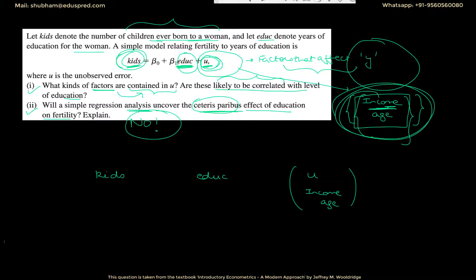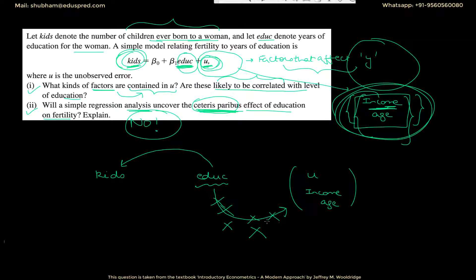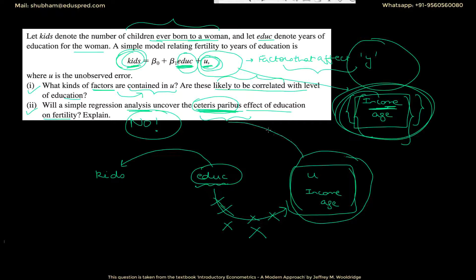If you want the ceteris paribus effect of education on fertility, it means that when education changes, the variables in U should have nothing to do with it — there should be no linkage between EDUC and U. The meaning of ceteris paribus is that if we change education, the other factors that can affect fertility should not change. If any linkage exists between education and the variables in the error term, you will not be able to get the ceteris paribus effect, because changing education would also change those error term variables, which in turn affect fertility.